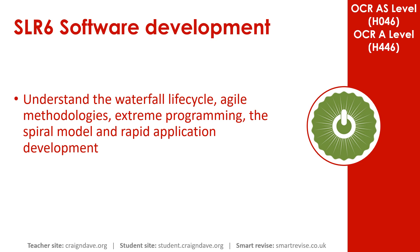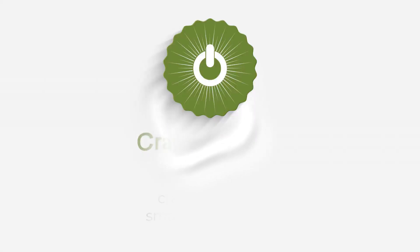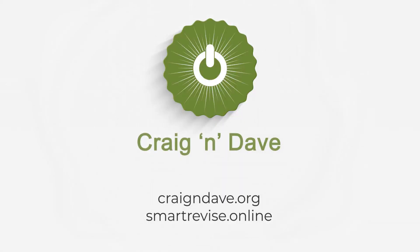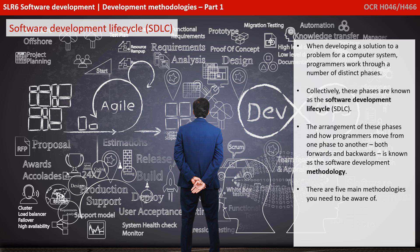In this video, we take a look at various software development methodologies. When developing a solution to a problem for a computer system, you go through a number of distinct phases. Collectively, these phases are known as the Software Development Lifecycle, or SDLC for short. The arrangement of these phases — how you can progress both forwards and backwards from one phase to another — is known as the Software Development Methodology.